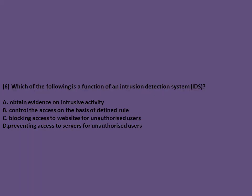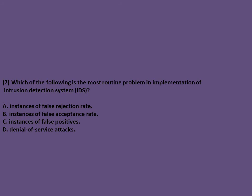Exam question: Which of the following is a function of the firewall? Obtaining evidence on intrusive activity is not a firewall function — the other options are features of the firewall. The most routine problem in implementation of IDS is instances of false positives.